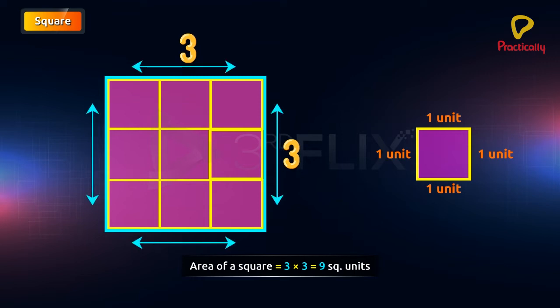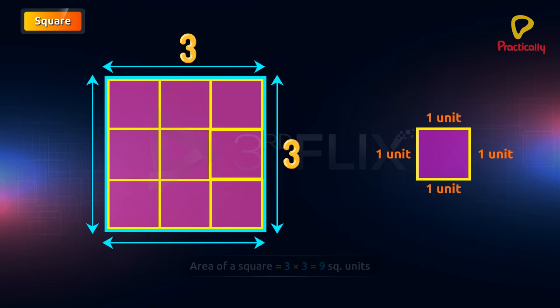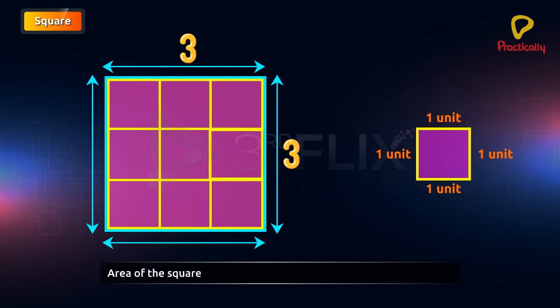Here, 3 is the length of each side. Area of the square equals to 3 into 3 equals to the length of the side multiplied by the length of the side equals to S times S equals to S² square units.